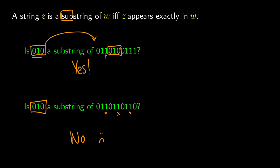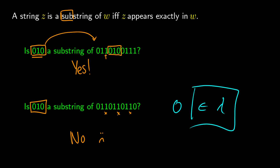Of course substrings don't have to be three characters; we could ask if just '0' appears in a string. And if we ask whether the empty string — epsilon or lambda — is a substring of any string, the answer is always yes, because you can always find 'nothing' in a larger string.